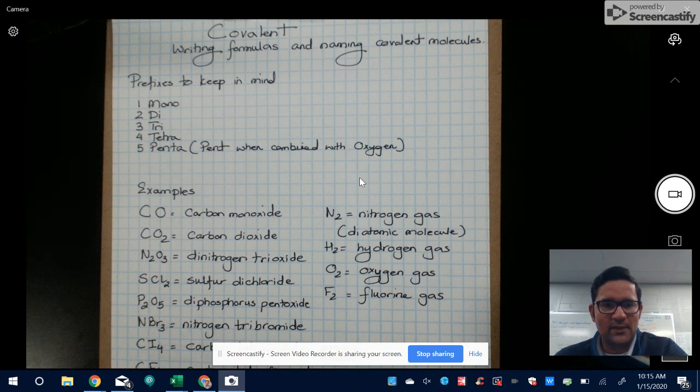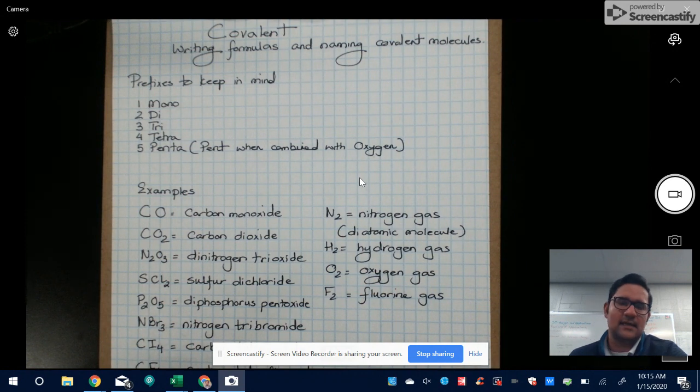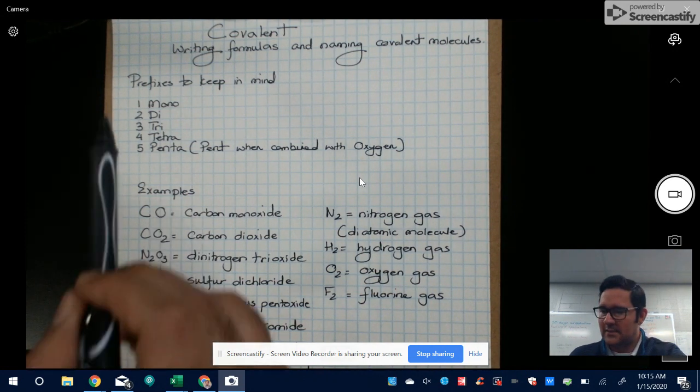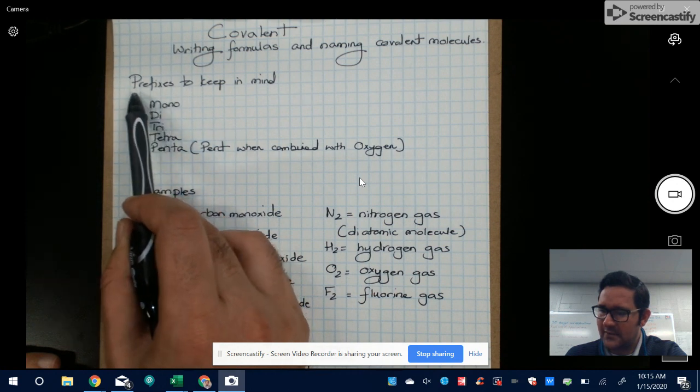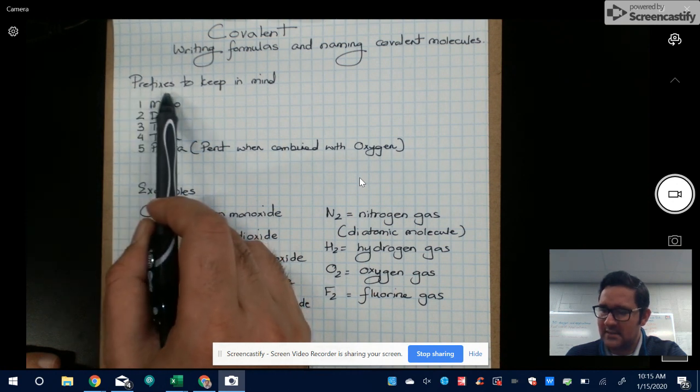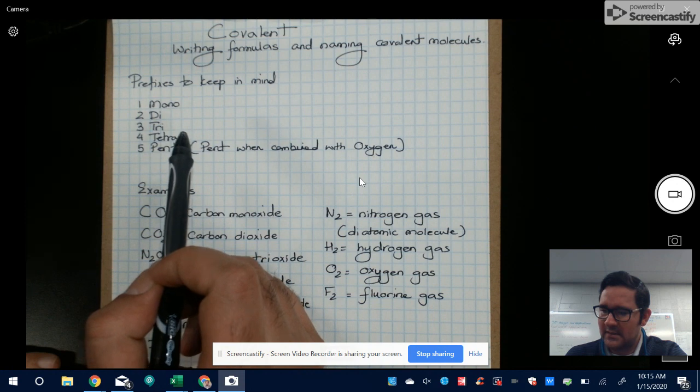Today I want to go over with you the covalent molecules and how to name them. So we want to discuss the nomenclature related to covalent bonds. A couple of things we want to keep in mind here is that we will have to look at the prefixes for the elements that are being combined.